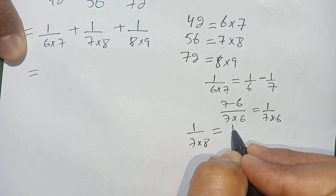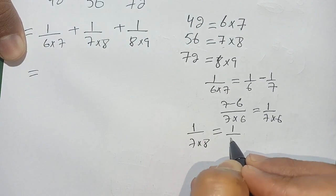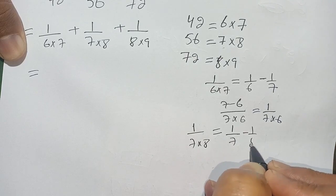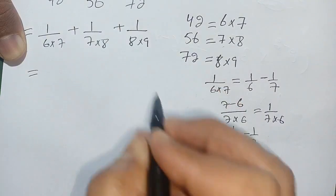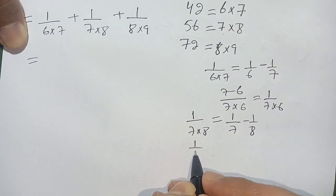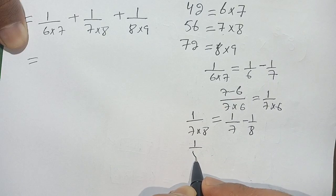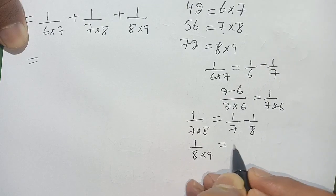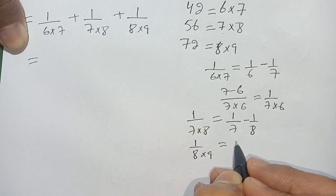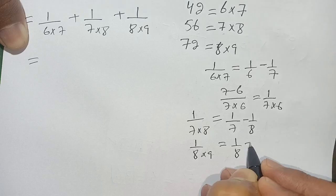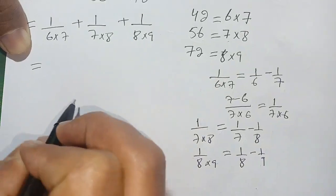1 divided by 7 times 8 can be written as 1 divided by 7 minus 1 divided by 8. Same case with the third term: 1 divided by 8 times 9 is written as 1 divided by 8 minus 1 divided by 9.